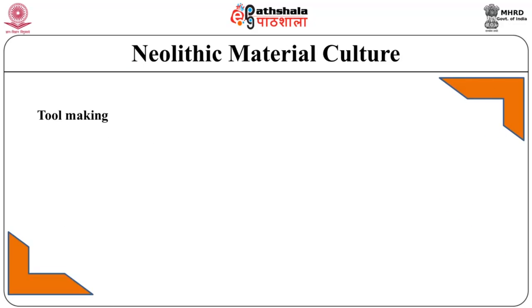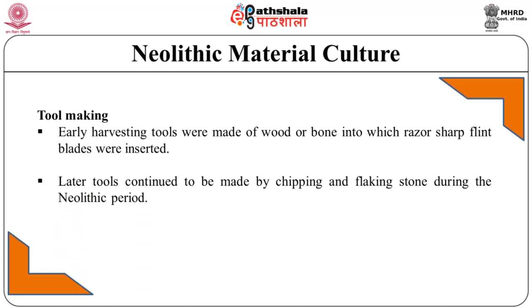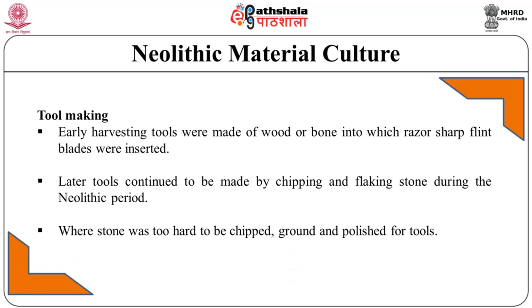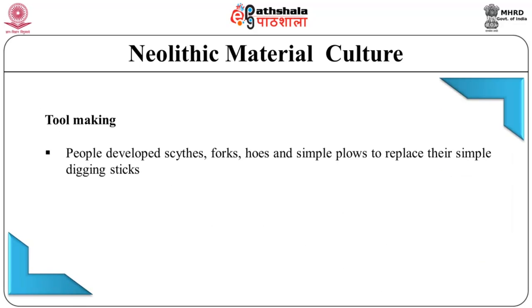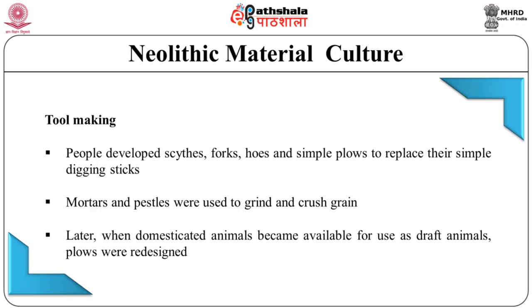Neolithic material culture is characterized by tool making, pottery, housing, and clothing. Early harvesting tools were made of wood or bone into which razor-sharp flint blades were inserted. Later tools continued to be made by chipping and flaking. During the Neolithic period, stone that was too hard to be chipped was ground and polished for tools. People developed spades, forks, hoes, and simple claws to replace their simple digging sticks. Mortars and pestles were used to grind and crush grain.